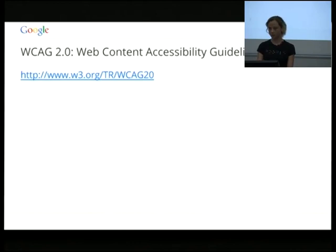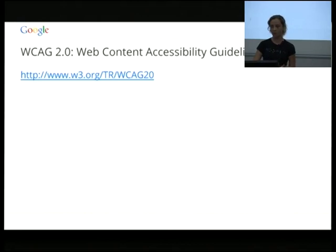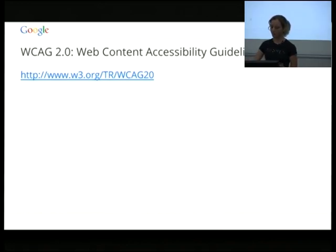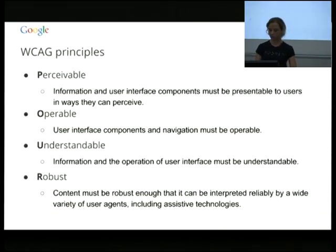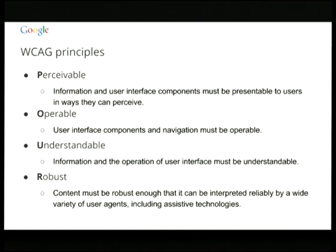Obviously there are a lot of things to consider, and luckily there are guidelines for what you actually need to consider. Especially if you're looking at things like governmental compliance laws, the Web Content Accessibility Guidelines is really where you need to be looking. It's pretty approachable, surprisingly. It's organised around four principles: perceivable, operable, understandable, and robust — or POUR — which as my friend pointed out is kind of an awkward acronym.